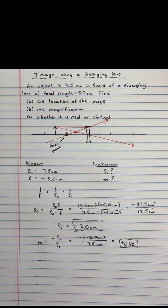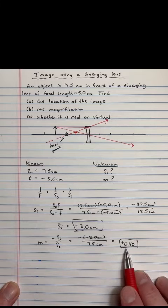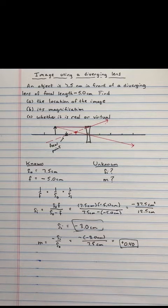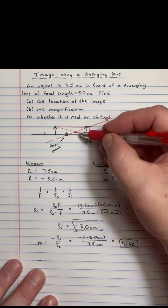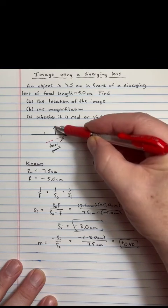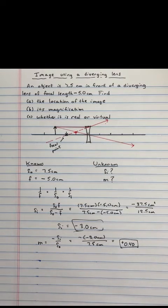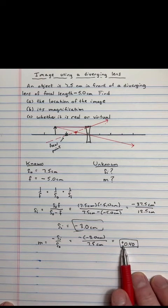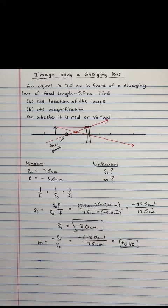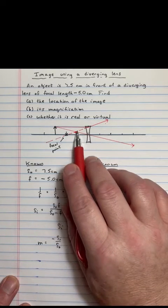The other part is the magnification. Magnification is a positive 0.4. So a little less than half the size of the object. And I think we can make that argument pretty well. This arrowhead is about a little less than half the size of the original object arrowhead. So that looks pretty good. And, more importantly, or just as important, there's a positive sign here, which means that the image is right side up. So the image is pointing right side up.